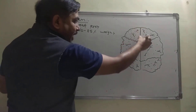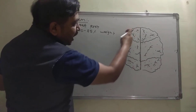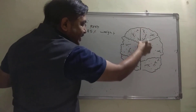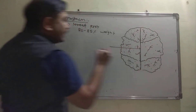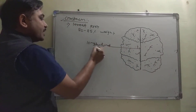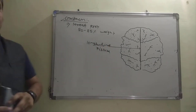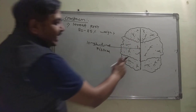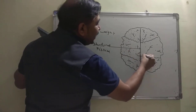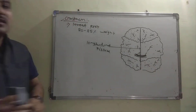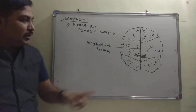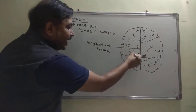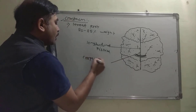The cerebrum can be divided into two hemispheres. The separation between the two hemispheres is called the longitudinal fissure — this has been asked many times in exams. Both hemispheres are also interconnected with each other by a transverse band of nerve fibers, which is called the corpus callosum.